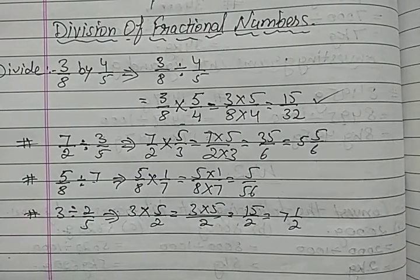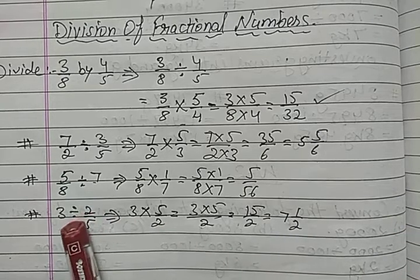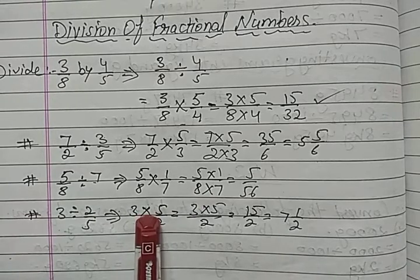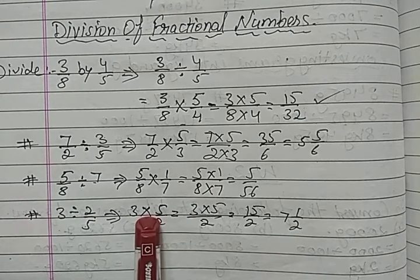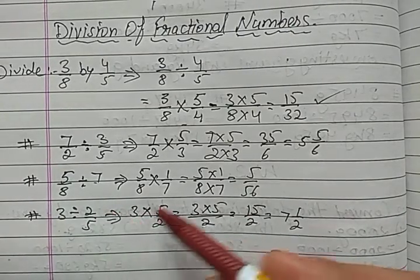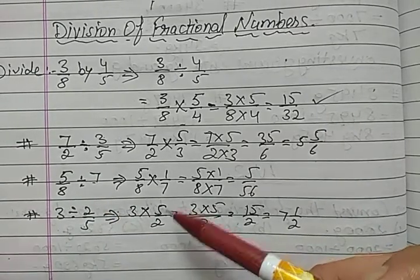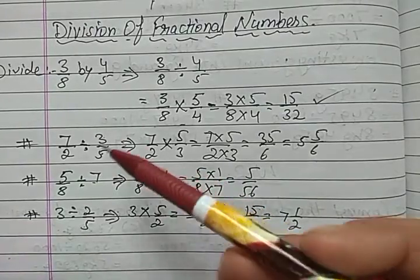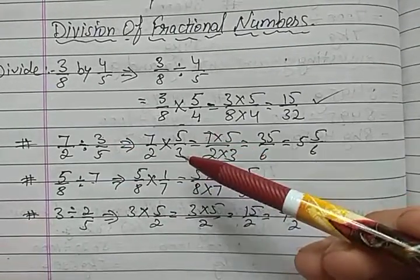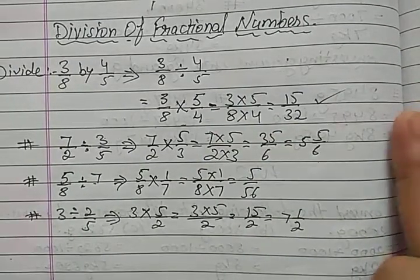In this way you can divide. Just remember this step: convert the division sign into multiplication sign by writing the reciprocal of the divisor. For example, 2 upon 5 becomes 5 upon 2; 7 becomes 1 upon 7; 3 upon 5 becomes 5 upon 3; 4 upon 5 becomes 5 upon 4. This is quite easy.